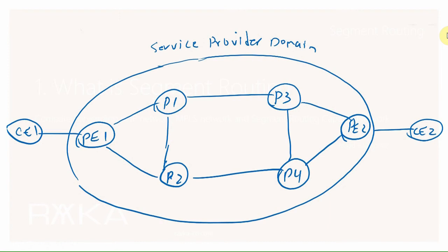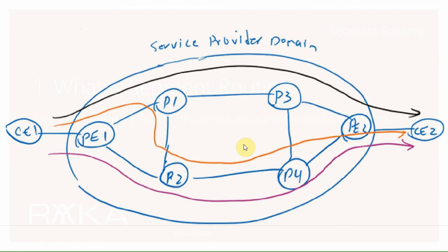In this topology, two CE routers connected to provider edge routers want to communicate through a provider network. As you can see, the provider has many options to move the traffic from source to destination — from above, from below, or partly from below and partly from above. Depending on the topology, the options can be more or less.